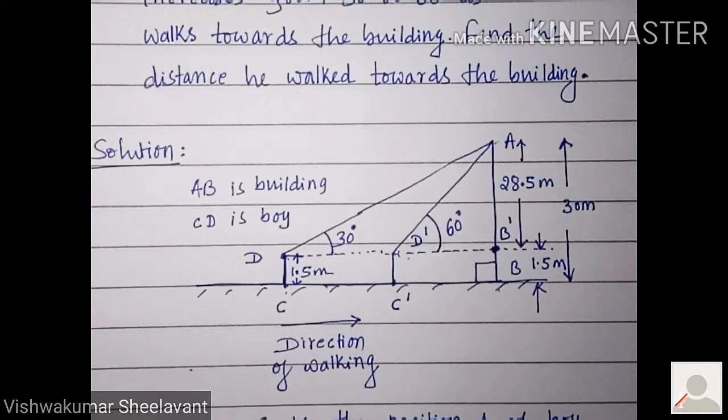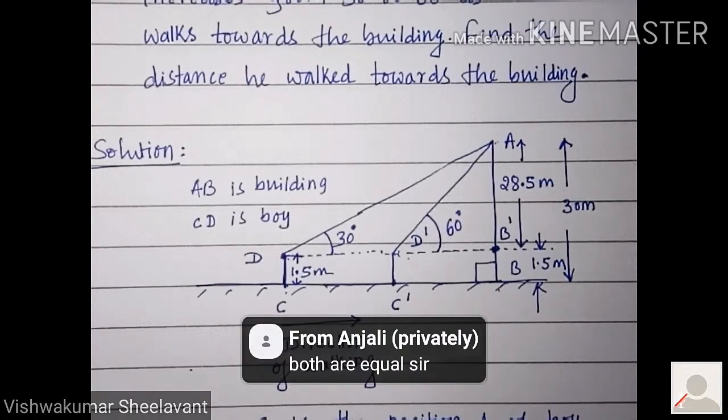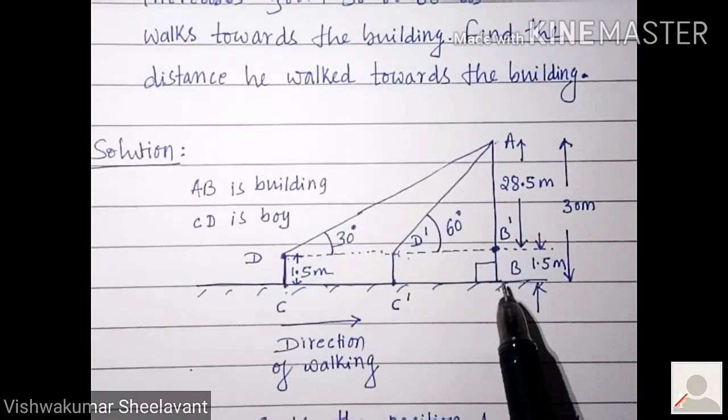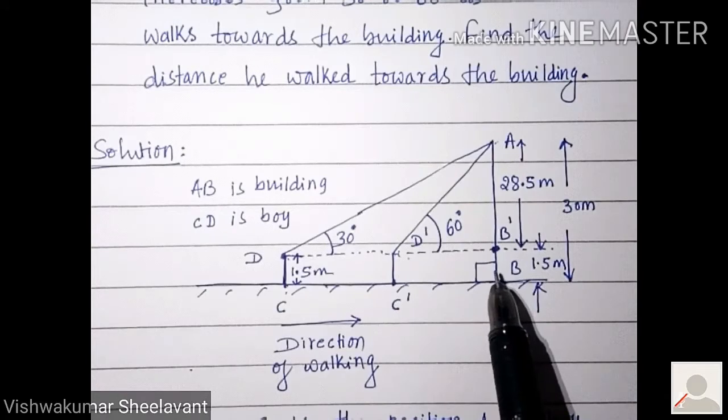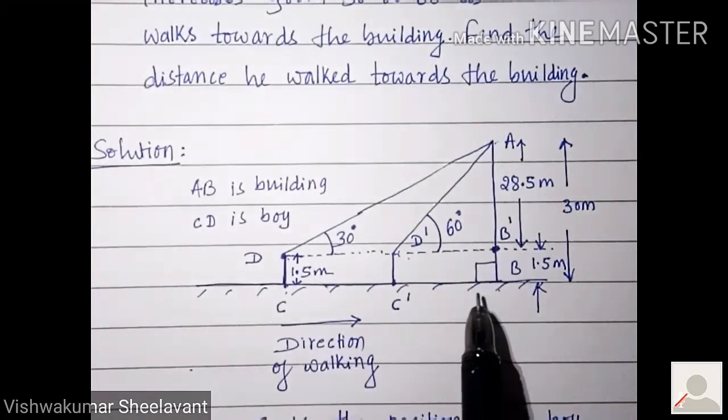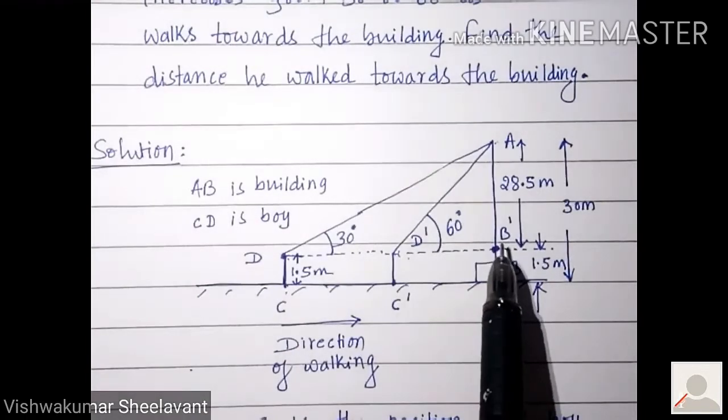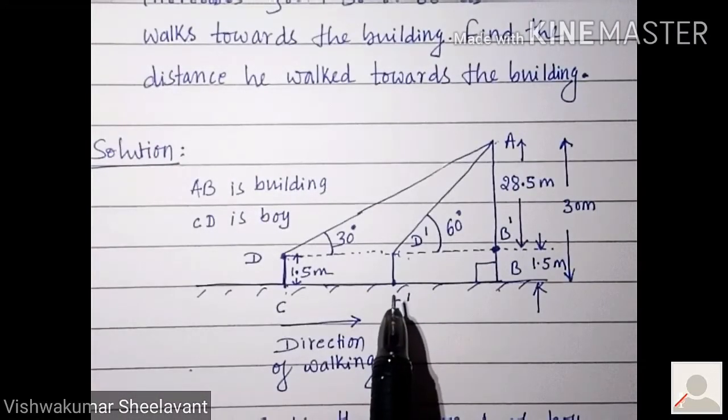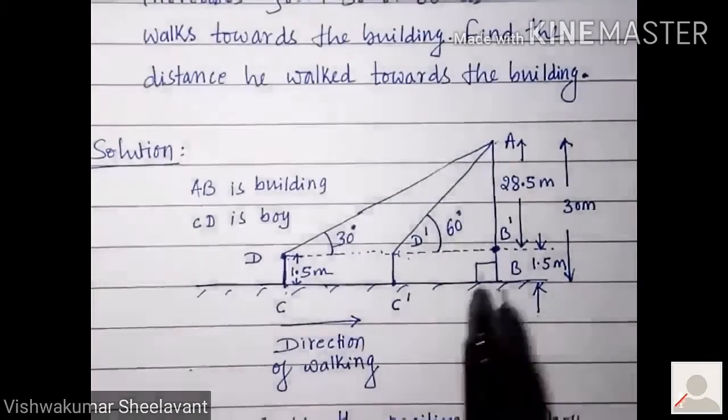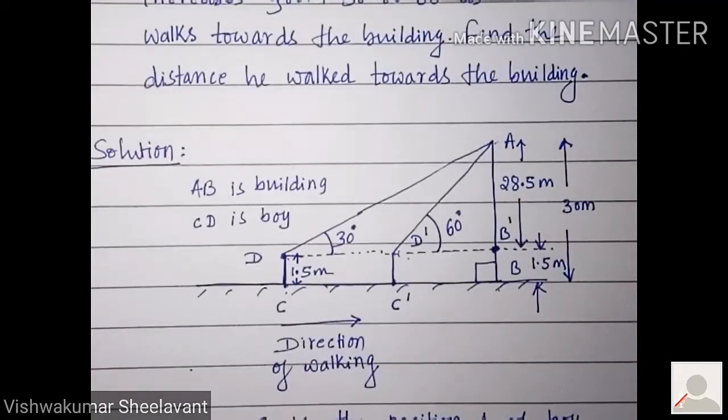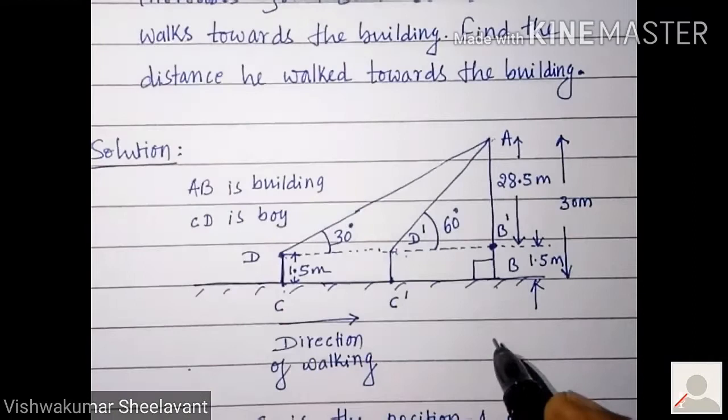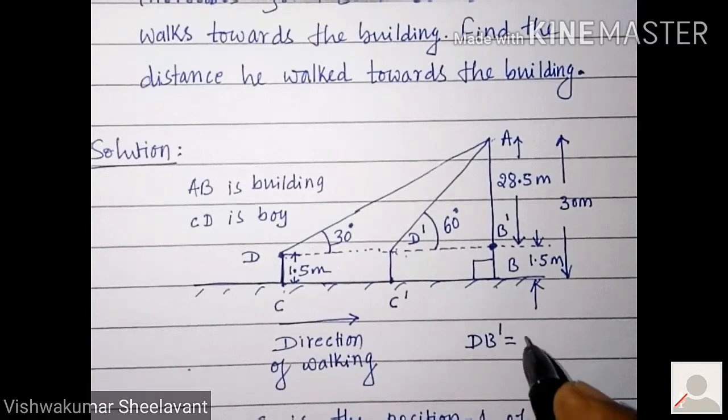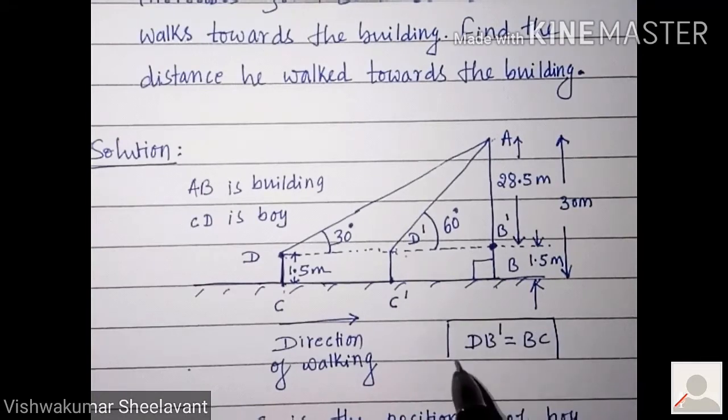Yes, because it forms a rectangle here, 1.5 meter, 1.5 meter, and here you are having 90 degrees. So this D, C, B, B dash will become a rectangle. Therefore, opposite sides will be equal. That means BC will be equal to B dash D. So that you can write here, D, B dash is equal to BC.